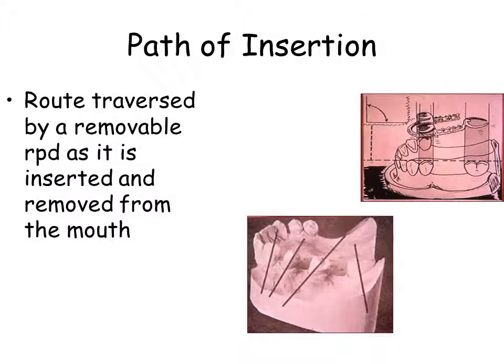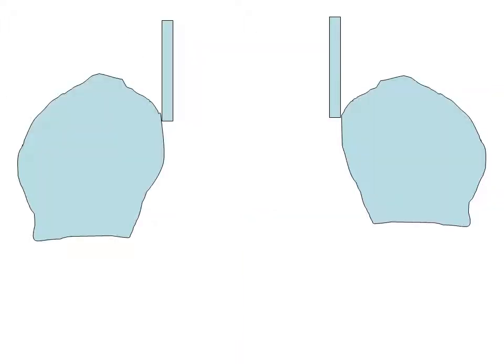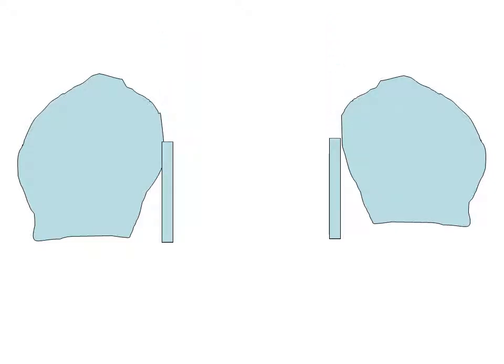Path of placement is the direction in which the restoration moves from the point of initial contact of its rigid parts with the supporting teeth to its terminal resting position. The path of removal is exactly the reverse. With a well-defined path of placement, the patient may place the partial denture with ease, in only one direction.